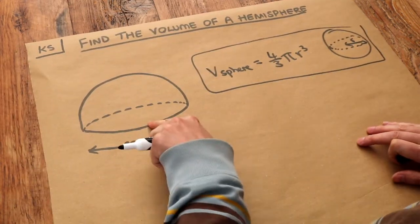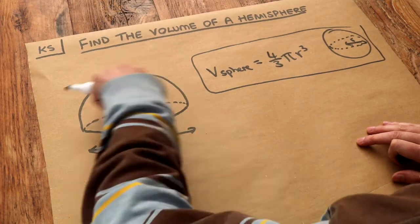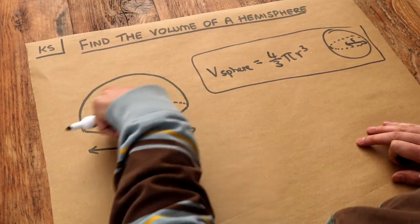Let's apply that to this to find out the full volume of the sphere first and then we'll adjust it to just find half a sphere.